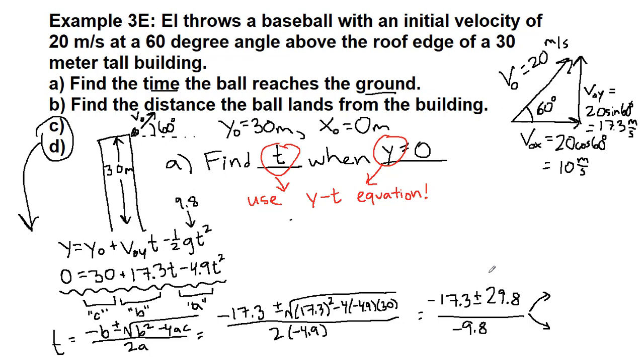The plus and the minus means that we get two possible answers. Let's take the plus first: if we add negative 17.3 plus 29.8 and then divide by negative 9.8 we will get negative 1.27 seconds. If we take the minus sign, negative 17.3 minus 29.8 all over negative 9.8, we will get positive 4.80 seconds.